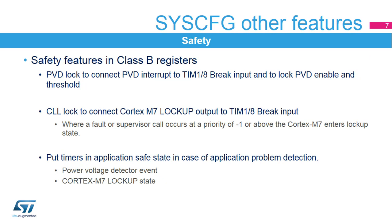The Class B System Configuration Register contains the control and status bits linked to safety and robustness. Two control bits direct certain error detection events to the timer's break inputs, allowing timer outputs to be placed in a known state during an application crash. Once programmed, the connection is locked until the next system reset. These internal events are the power voltage detector event and the Cortex-M7 lockup state.